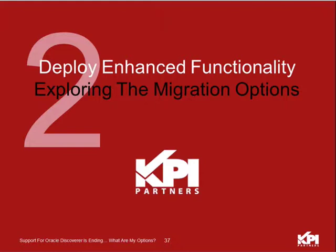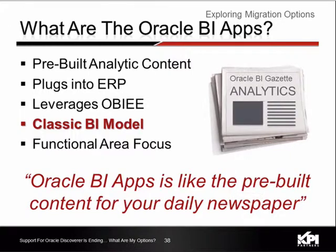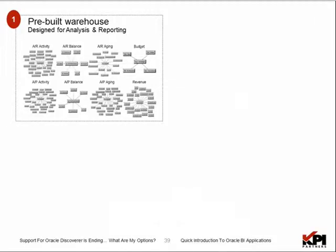The second major category of migration options is how to deploy more enhanced functionality, greater cross-functional reporting, and greater coverage for other ERP systems using Oracle BI Applications. What are the Oracle BI Applications? They are a set of pre-built analytics and reporting modules delivered by Oracle. These meet not only operational reporting needs but also analytical needs such as trending and year-over-year growth. Oracle provides prepackaged analytic applications such as financial analytics, procurement spend analytics, HR analytics, and more — with over 100 star schemas included.